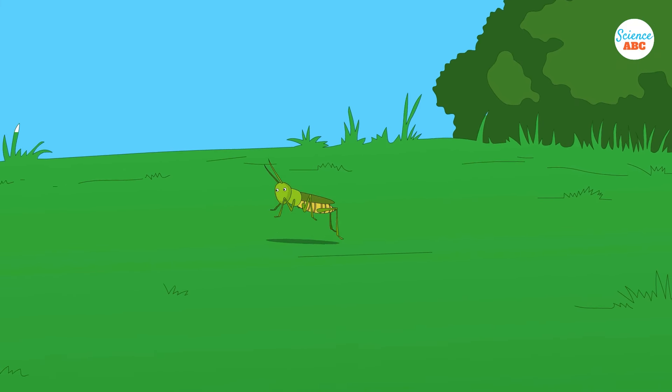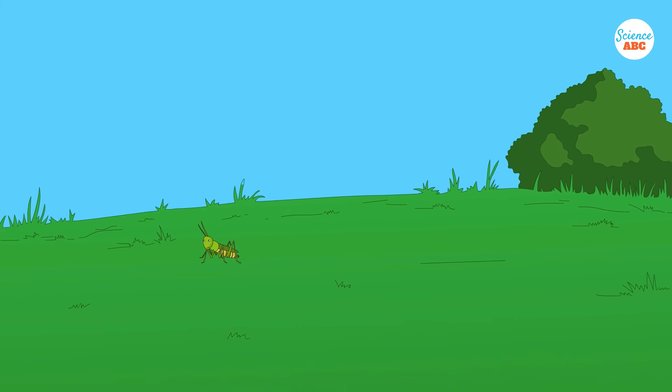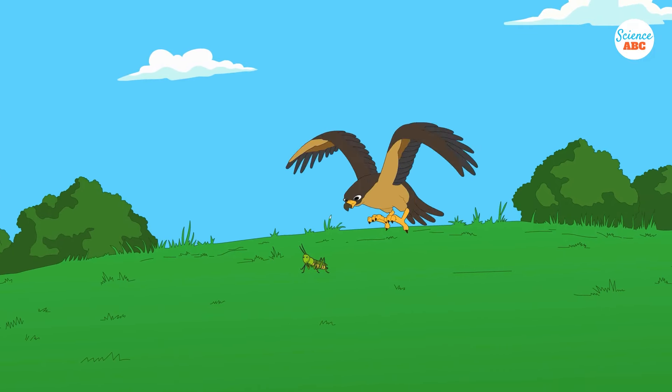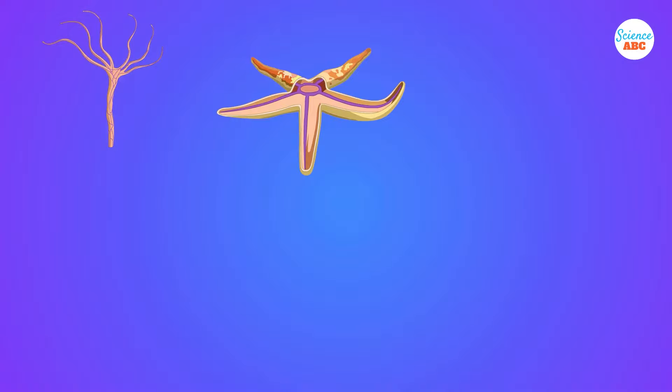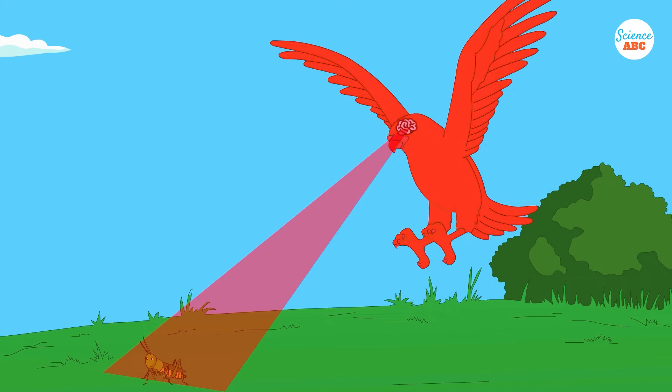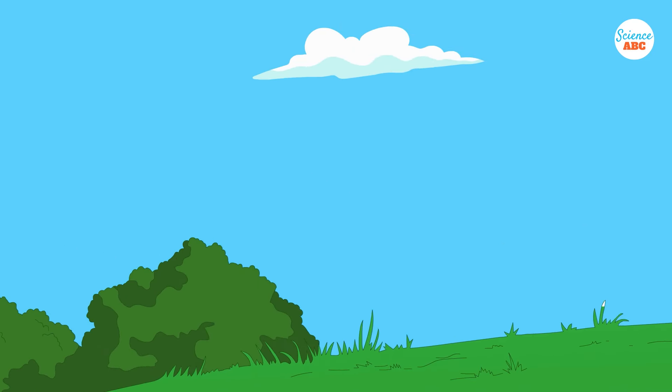For a living thing to live, it must sense the world in which it lives, interpret it, and respond to it accordingly. In most multicellular animals, some form of nervous system does this job. It senses the world, communicates this information to a processing facility, which then tells the rest of the body how to respond.